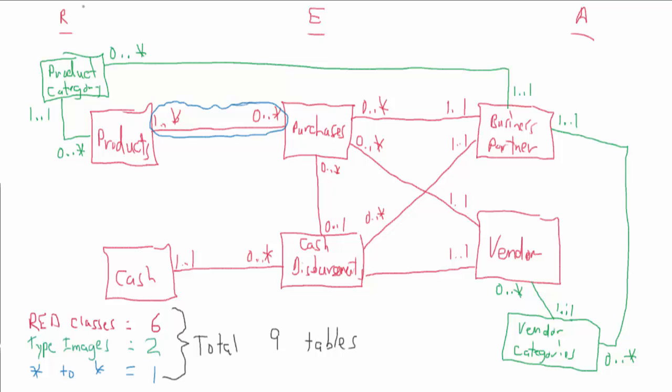So here for instance, if we've got purchases and we've got a many-to-one back to vendor, that means we're going to have a foreign key for vendor. So we'll have a foreign key vendor and we'll also have a foreign key for business partner. So for every purchase, I'm going to have to record in the purchase event what vendor, what business partner is associated with that particular purchase. And I'll do the same thing with cash disbursements. I'll do the same thing with my products to product category. For each product, which product category does it belong to?